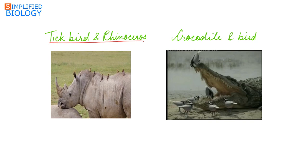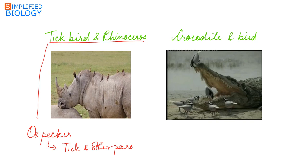The next example of proto-cooperation is the tick bird (oxpecker) and the rhinoceros. The tick bird feeds on the ticks and other parasites present on the body of the rhinoceros. The birds get food, and in turn they protect the rhinoceros from pests.